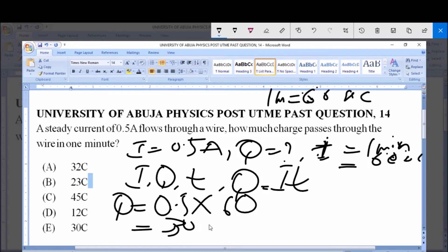So the answer is 30, 30 coulombs. 30 coulombs is the correct answer to this question, and that is the same thing as option E. So a steady current of 0.5 amperes flows through a wire. The quantity of charge that will pass through the wire in 1 minute is 30 coulombs.